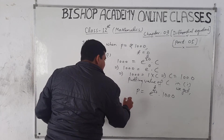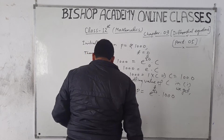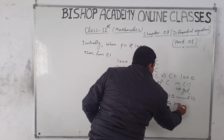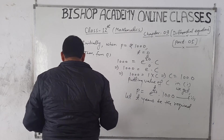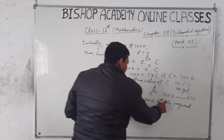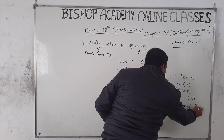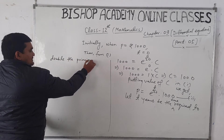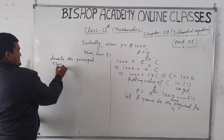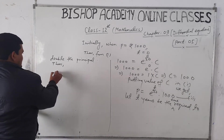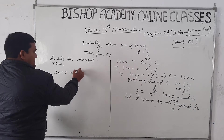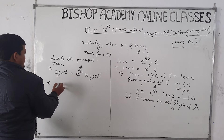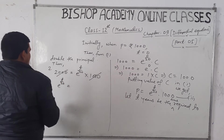Let T years be the required time to double the principal. Then substituting P = 2000: 2000 = e^(T/20) × 1000. The 1000 cancels from both sides, giving e^(T/20) = 2.